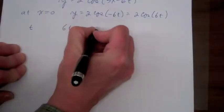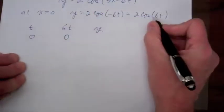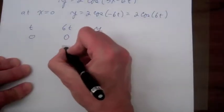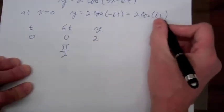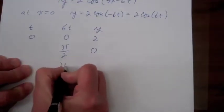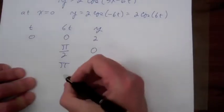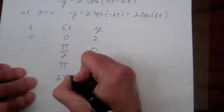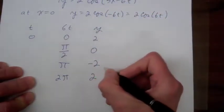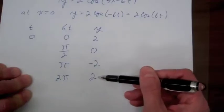When t = 0, 6t is 0, cosine of 0 is 1, so y = 2. When 6t = π/2, cosine of π/2 is 0, so y = 0. When 6t = π, cosine of π is -1, so y = -2. When 6t = 2π, cosine of 2π is 1, so y = 2 again. So the function is going to oscillate from 2 down to -2 and then back up to 2.